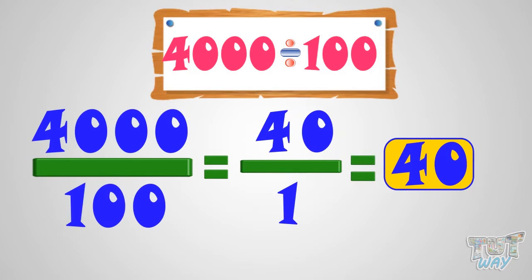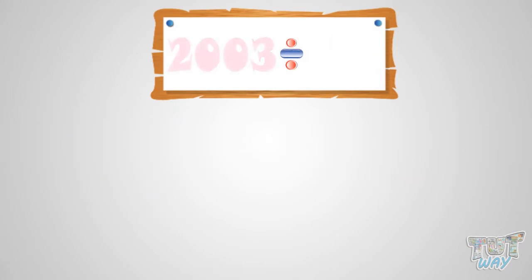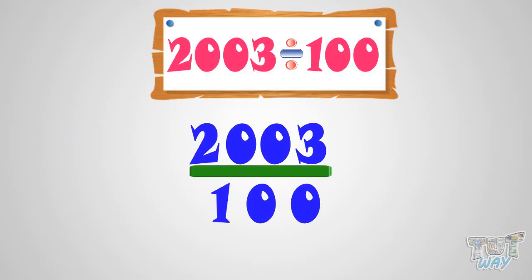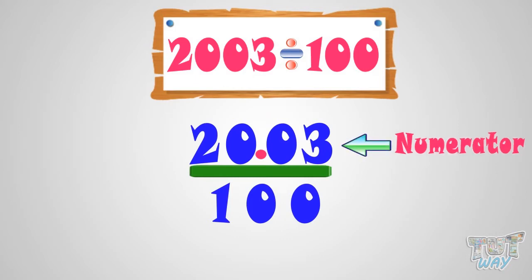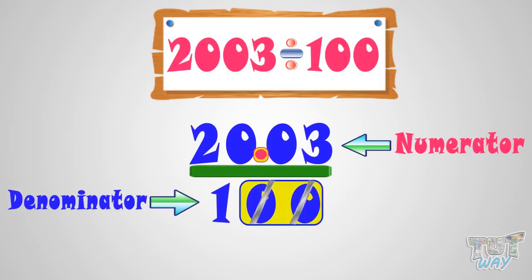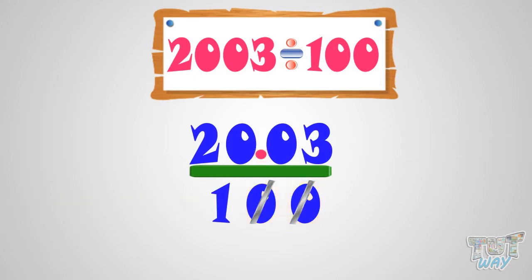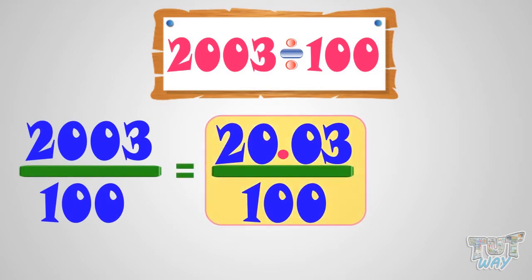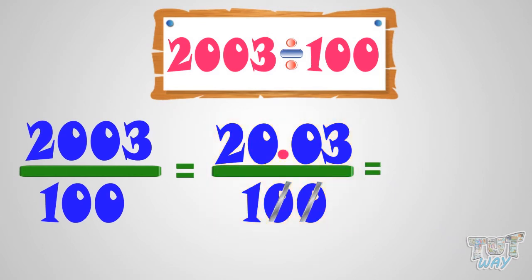Now let's take another example. Let's divide 2003 by 100. In order to divide with 100, we have to cut the two rightmost zeros from the numerator and denominator. But here we don't have zeros at the rightmost places in 2003. So, what should we do? We put a decimal after two digits from the right in the numerator. We are left with 20.03 by 1. So, 2003 by 100 equals 20.03.